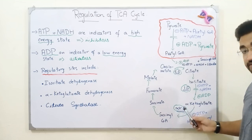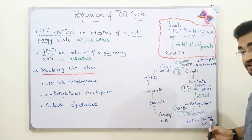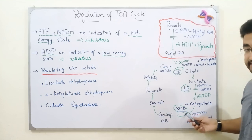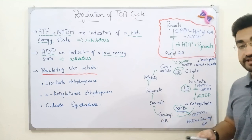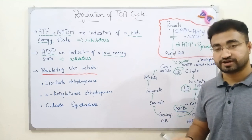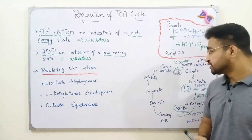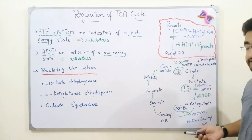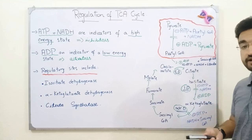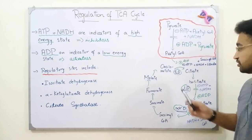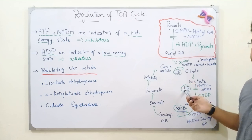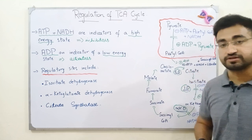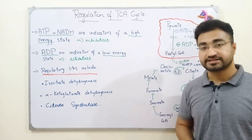Similarly, in the third regulatory step, product inhibition also occurs — succinyl-CoA, which is the product of that step, itself inhibits alpha-ketoglutarate dehydrogenase, indicating that the cell already has a large amount of succinyl-CoA because TCA has been running fast. So you can see positive signs for activators and negative signs for inhibitors at these three regulatory steps. Remember which the regulatory enzymes are, and remember their effectors — both activators and inhibitors.